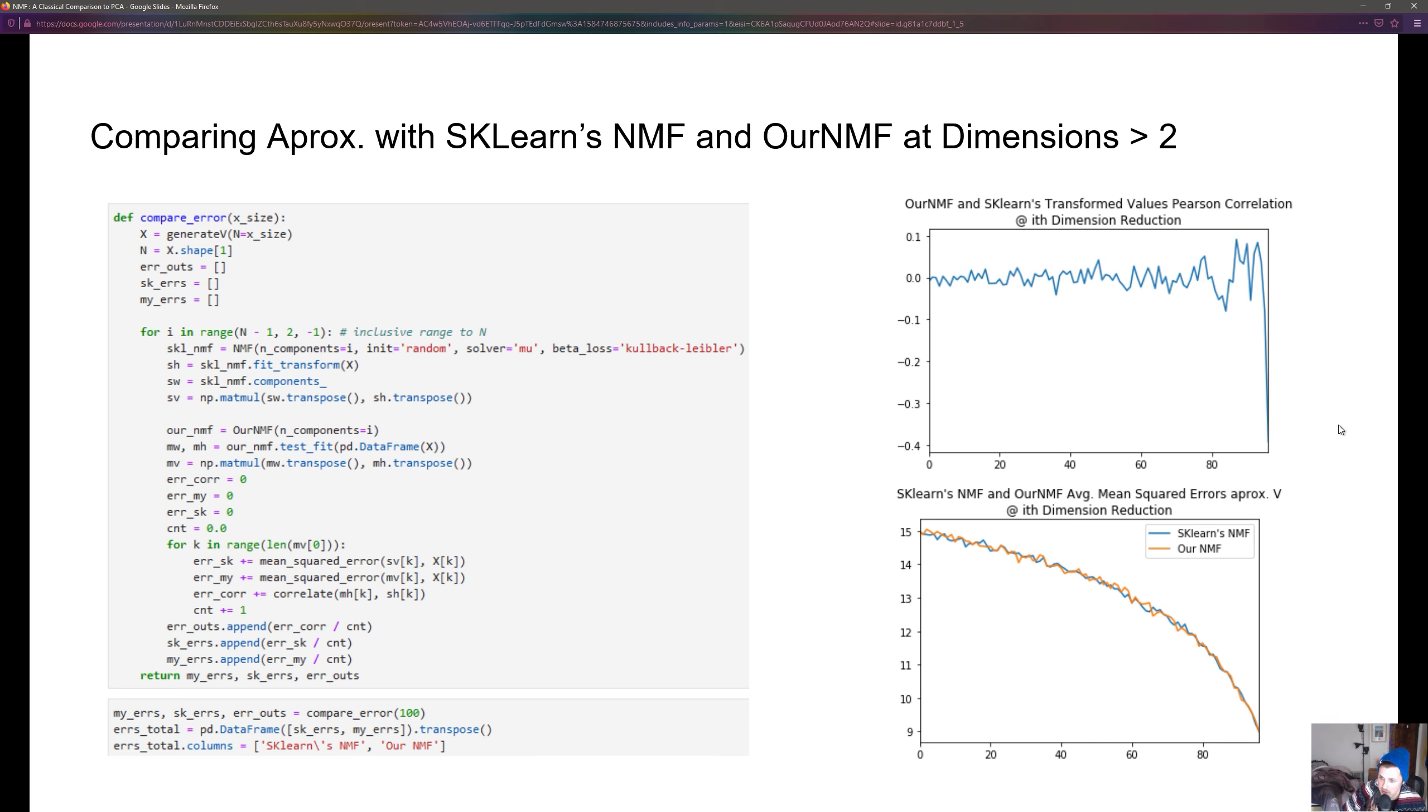Looking at the second graph we can see that the average mean squared error at approximating V trends higher over time which is obvious, the less data we have the worse we'll be approximating the original input.